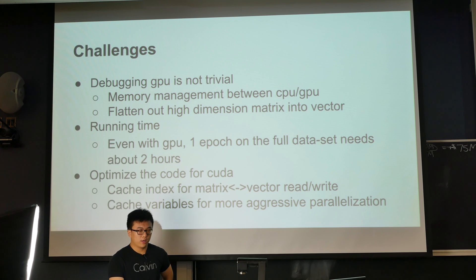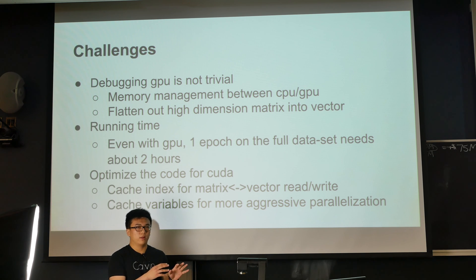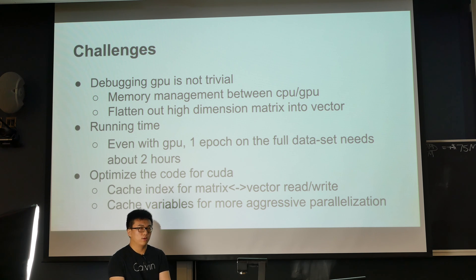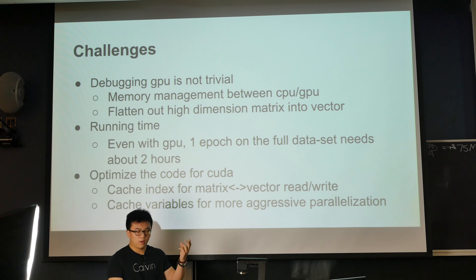Here are some challenges we met during implementation. Debugging on GPU is not trivial: memory management is tricky because there are two copies of memory — one on GPU and one on CPU — and you cannot print values or set breakpoints in GPU memory, so you have to memcpy between GPU and CPU, which is a costly operation. To use CUDA's parallelized libraries we had to flatten high-dimensional matrices into vectors, making indexing complicated. Also, running time is very long: even with GPU, one iteration takes about two hours, so we cannot see results quickly and need to optimize CUDA code.